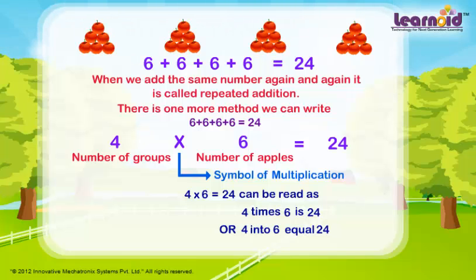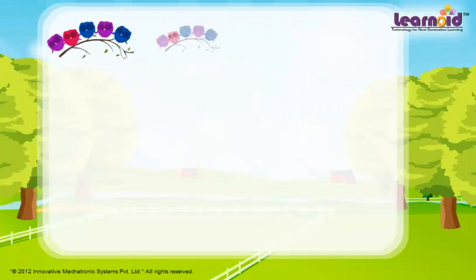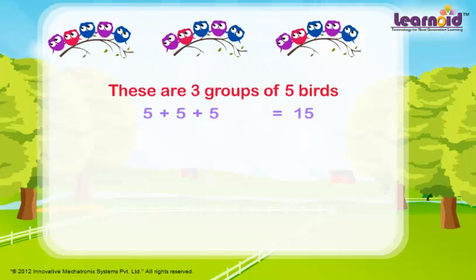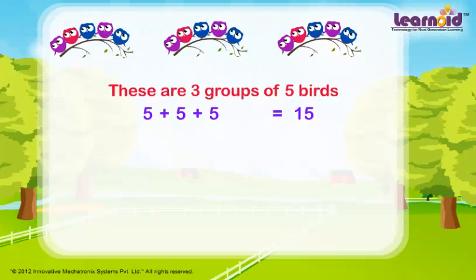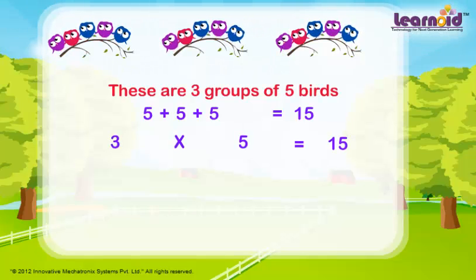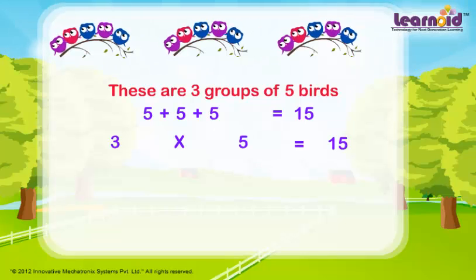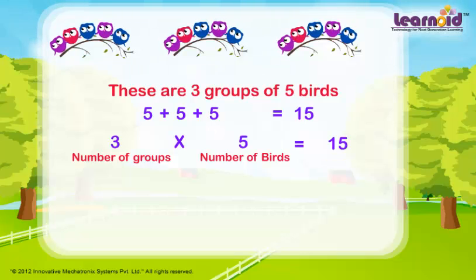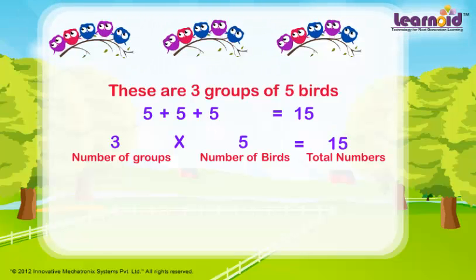Let's see one more example. These are three groups of five birds. 5 plus 5 plus 5 is equal to 15, or 3 into 5 is equal to 15. 3 is the number of groups, 5 is the number of birds in each group, and the total number of birds is 15.